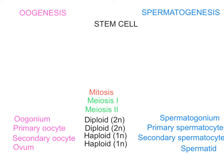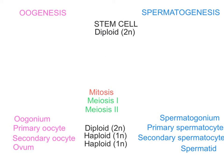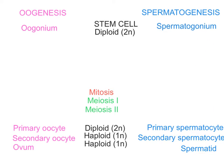This video is going to compare oogenesis with spermatogenesis. Both of these processes start with a stem cell. The stem cell is going to be diploid, indicating that it is capable of continual regeneration. That cell in females is known as the oogonium, and in males is known as the spermatogonium.